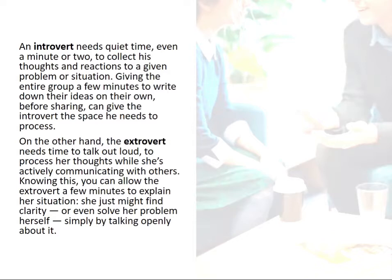Here are some ideas. An introvert needs quiet time — even a minute or two — to collect his thoughts and reactions to a given problem or situation. Giving the entire group a few minutes to write down their ideas on their own before sharing can give the introvert the space he needs to process. On the other hand, the extrovert needs time to talk out loud to process her thoughts while actively communicating with others. You can allow the extrovert a few minutes to explain her situation — she just might find clarity or even solve her problem simply by talking openly about it.